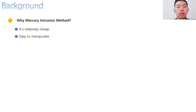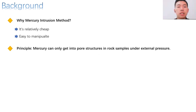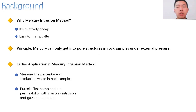A mercury intrusion method is cheap and easy to manipulate. Thanks to these advantages, it has long been used in measuring the percentage of irreducible water in bulk samples. It is based on the theory that mercury cannot enter the pores of the sample at normal atmospheric pressure, but it can get into the sample under external pressure. Purcell first conducted an experiment in which he combined the mercury intrusion method with permeability prediction and got an equation model. The model was followed by several revisions by other scholars.